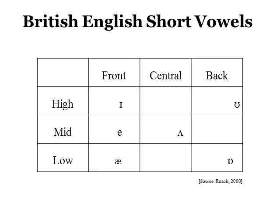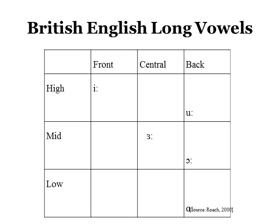These are the British English short vowels. According to tongue height and tongue position, they can be high, mid, or low, and front, central, or back. These are the long vowels of British English, which can also be classified as high, mid, or low, and front, central, or back.